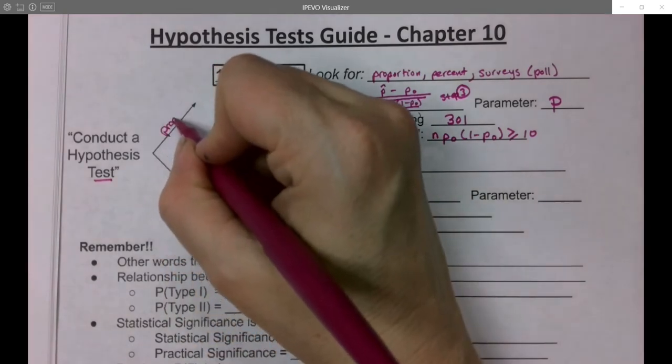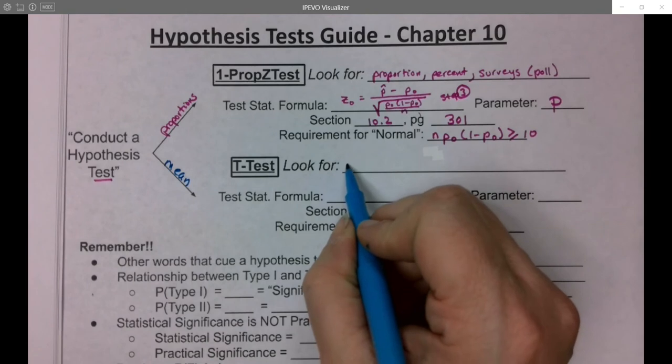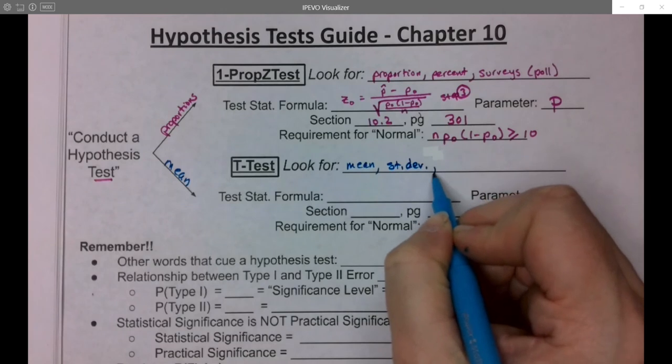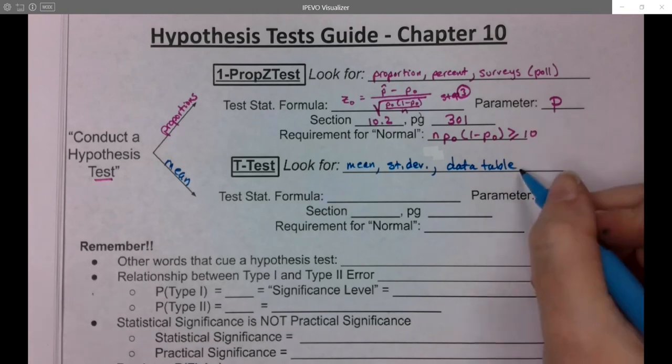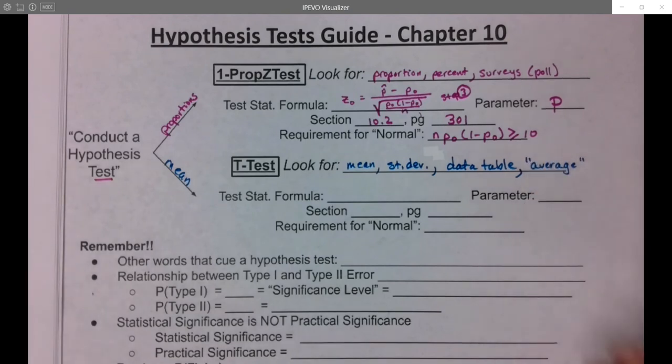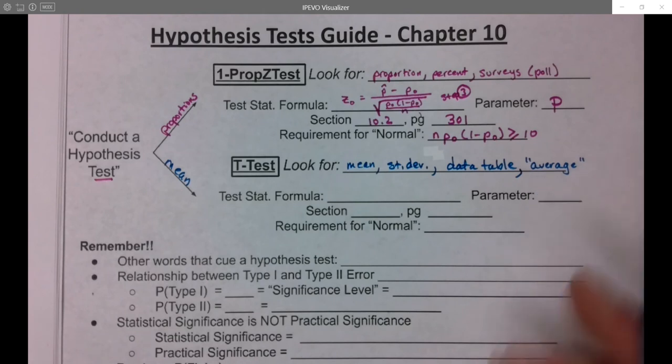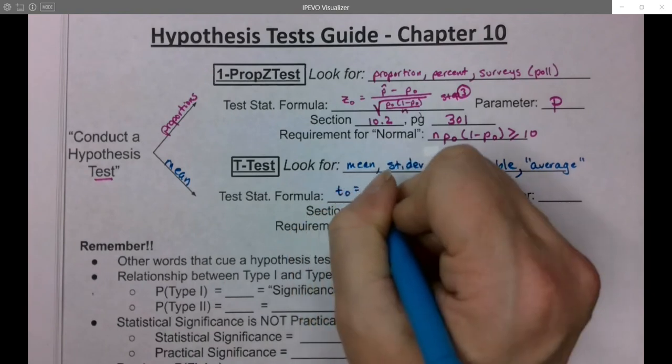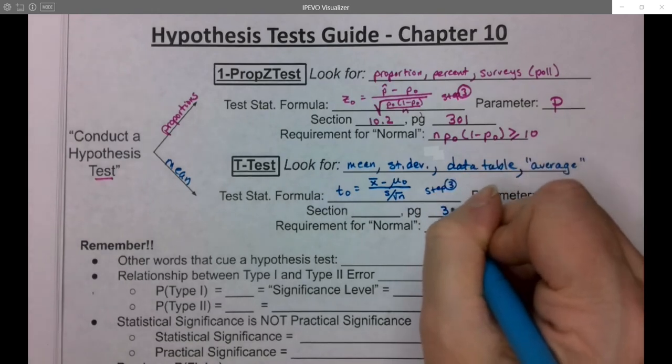For a mean, you're going to look for words like 'mean' or 'standard deviation.' Another big clue is if you have a table of data. If they give you a data table, that's a big sign that this is the one you're doing. Data tables don't work for proportions because proportions are about qualitative data turned into a percent. Quantitative data can be given in a table, and you'll also see the word 'average' thrown around. Now the test statistic formula is t₀, which is x̄ minus μ₀ over s/√n.